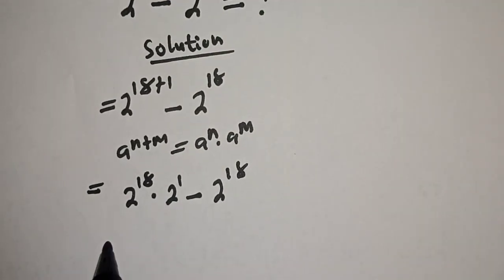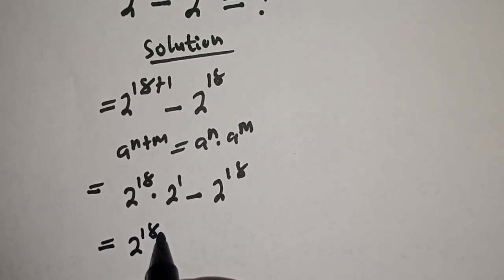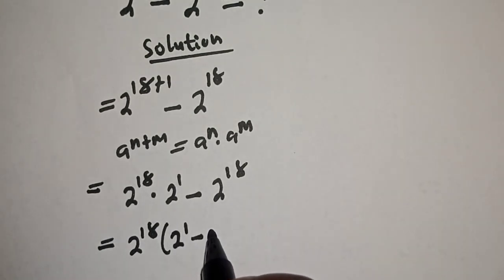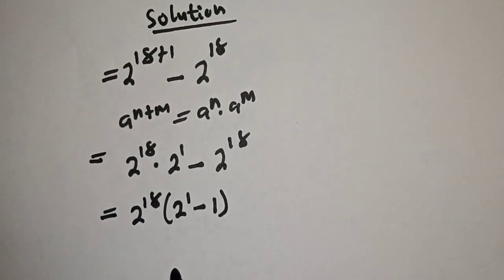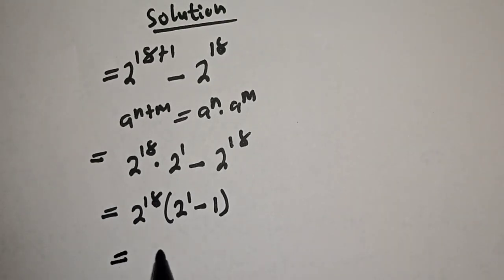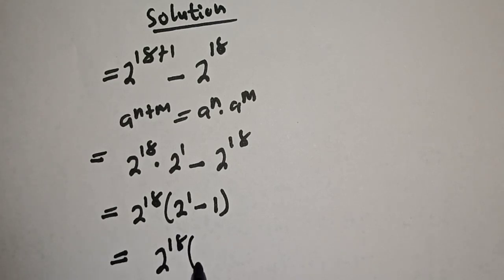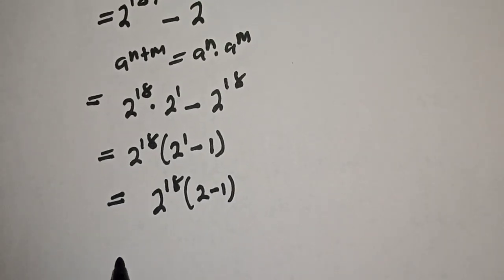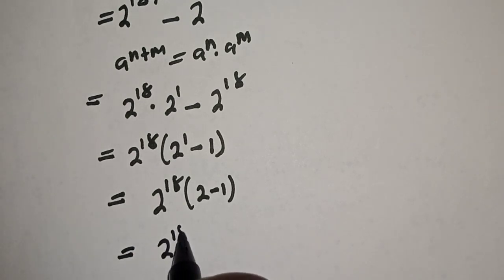Now, 2 raised to power 18 is common. Let's factor it out. We have 2 raised to power 18 in brackets — this divided by this — we have 2 raised to power 1 minus this divided by this, which is 1. This is equal to 2 raised to power 18 brackets, 2 raised to power 1 is 2, minus 1.